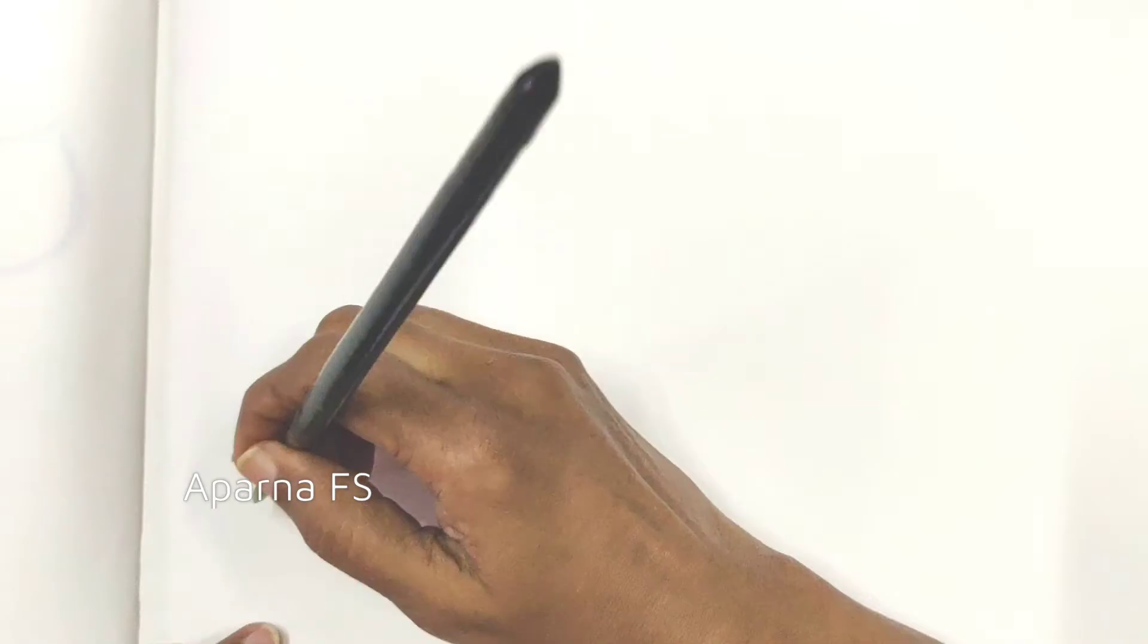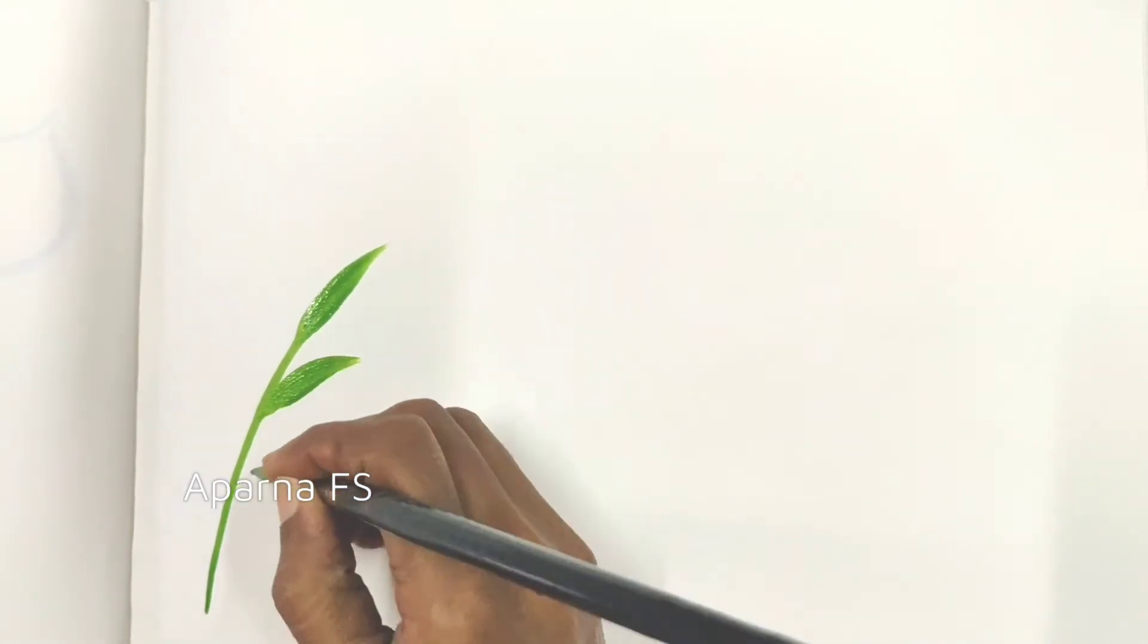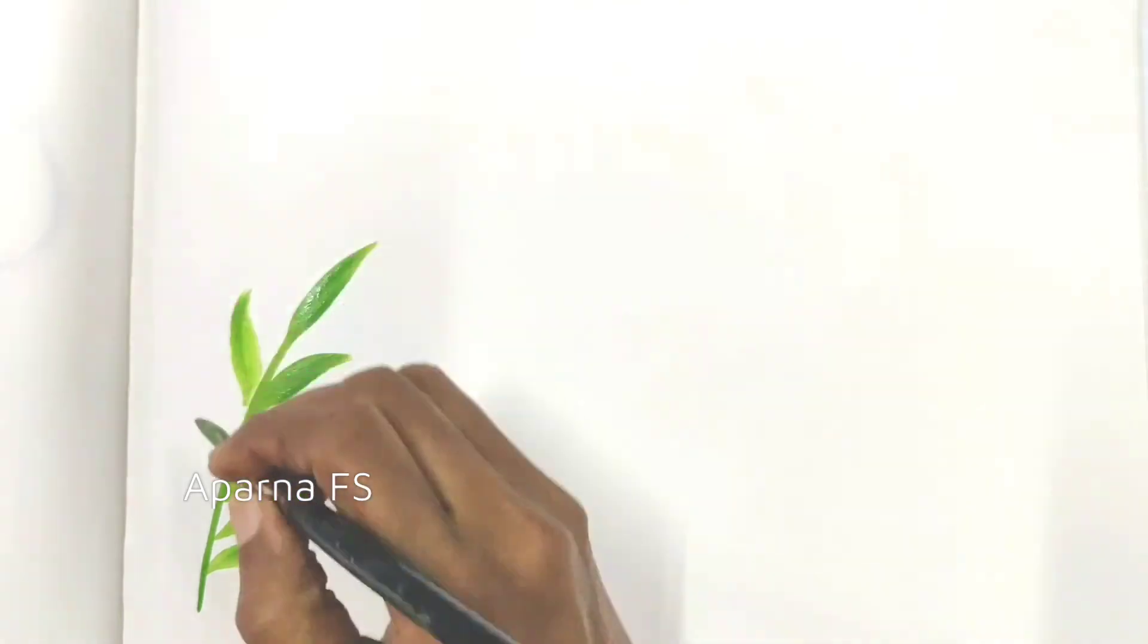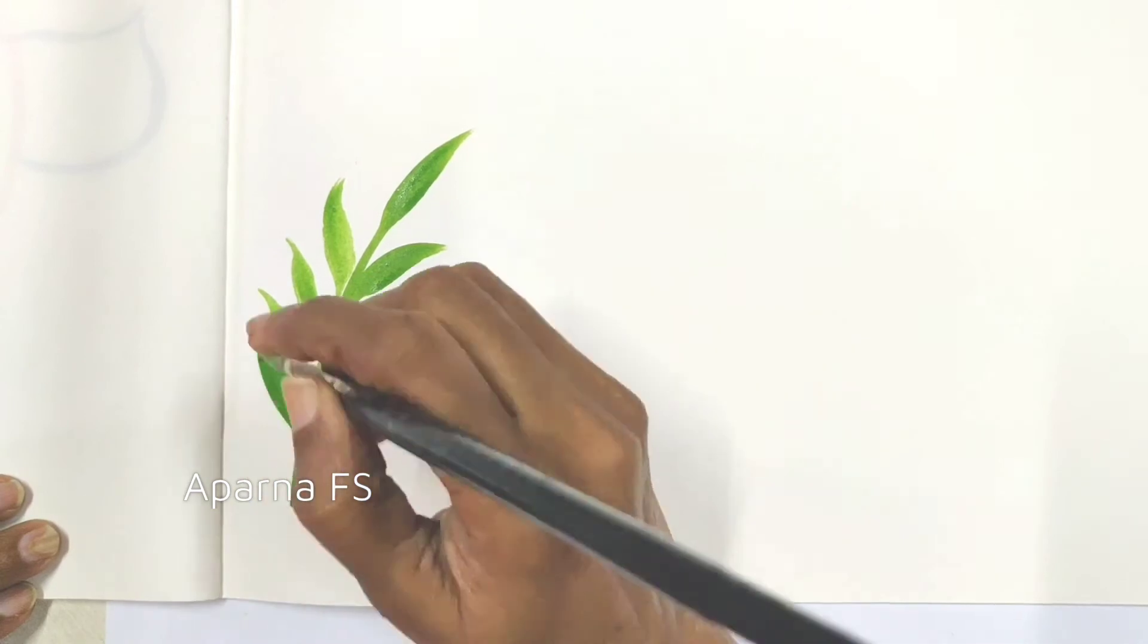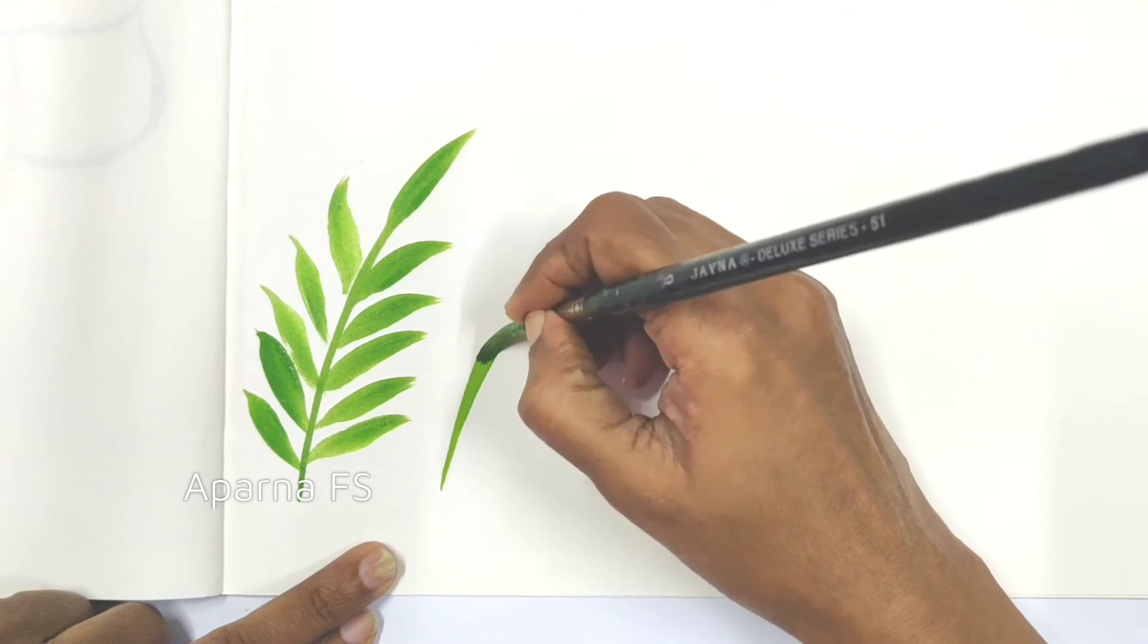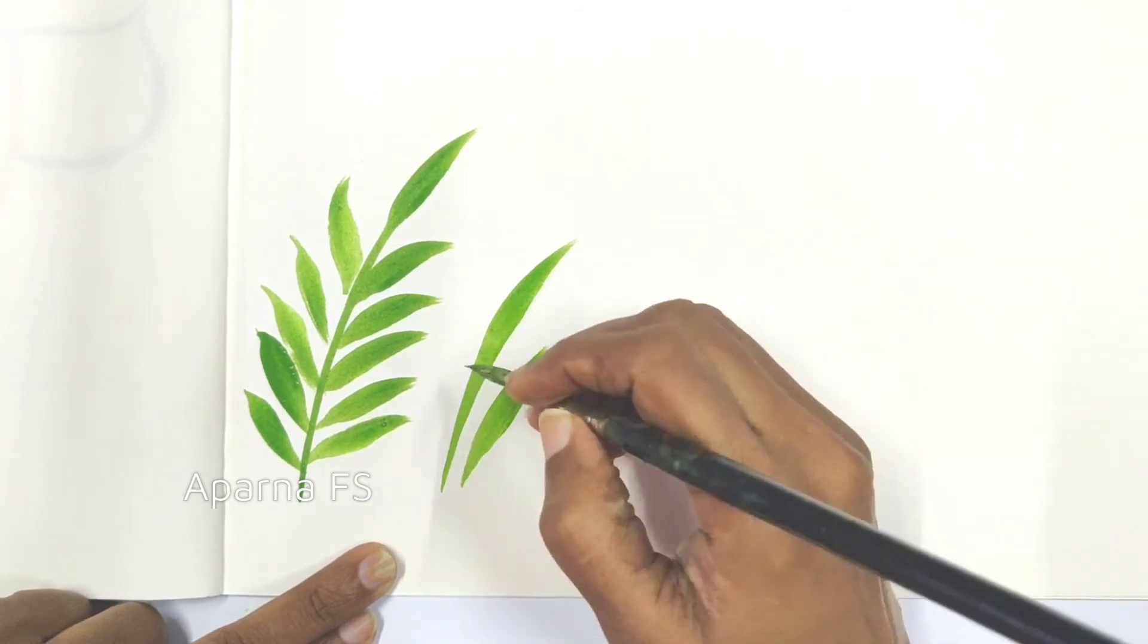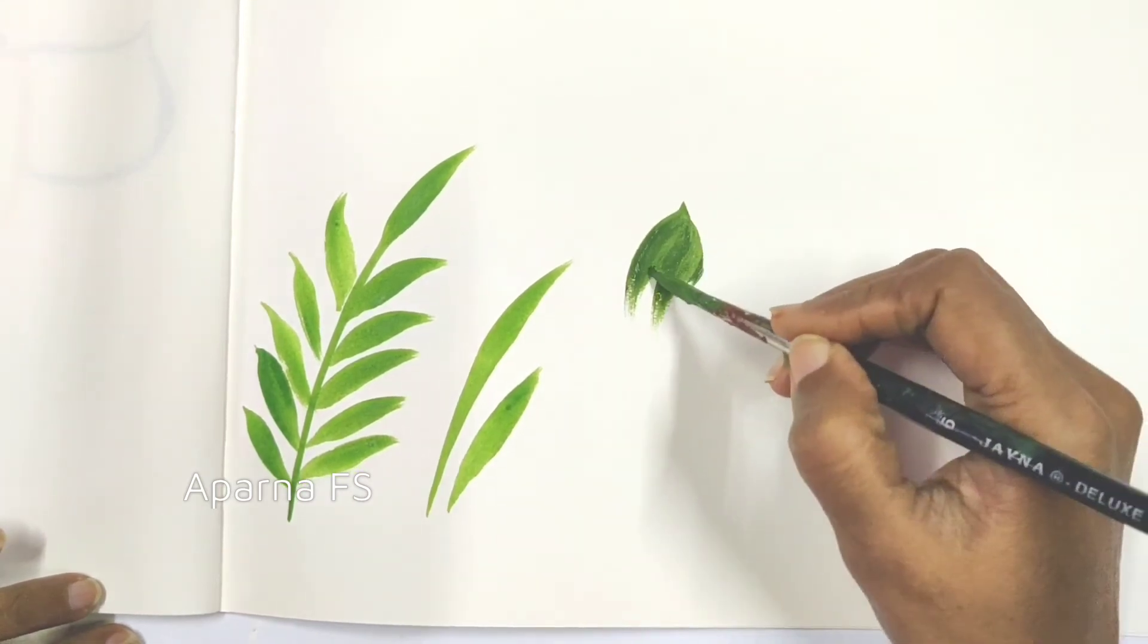After these flowers, let's learn how to paint leaves. These are simple stroke leaves with six number brush. Next one is the long thin lily leaf. This is the third variety of leaf.